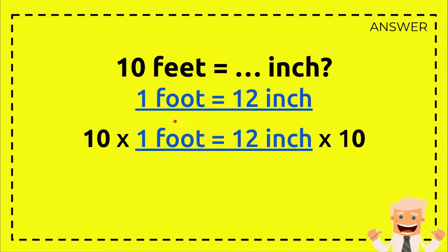Then you multiply. You need to multiply 1 foot with 10 and 12 inches with 10. The reason why we need to multiply both numbers with 10 is because the only number we have from the question is 10. If you want to convert feet to inches, if you want to make an equation from feet to inch, then you need to make it equal.